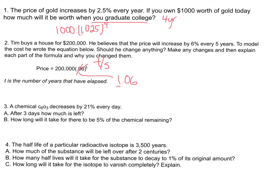Number three: a chemical, C603, decreases by 21% every day — I have no idea if this is a real chemical. After three days, how much is left? You take some initial amount and multiply it by a factor to the power of the number of time periods. Since it's decreasing by 21%, you only have 79% left each day, so you multiply by 0.79. For three days, that's 0.79 to the third power. You get a decimal that tells you the percentage remaining.